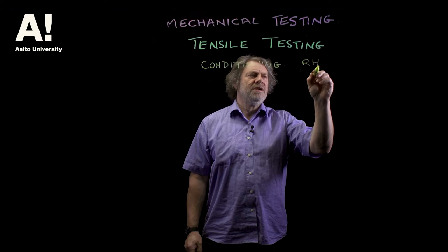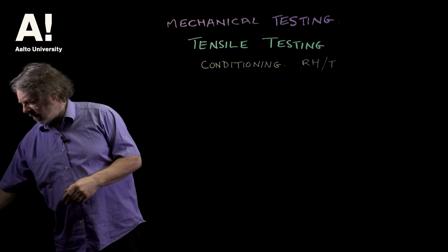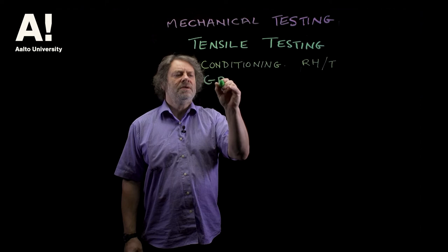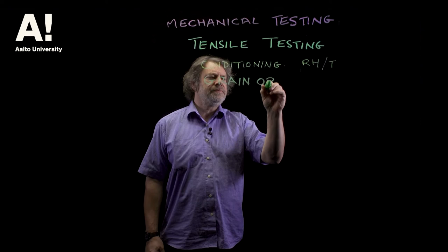The standards will tell you something about relative humidity and temperature — what you must use in order to get the samples in the same state, so you're comparing like with like. The other thing you have to be aware of when working with wood is the grain orientation.